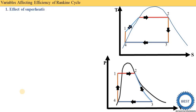First, we understand the effect of superheating of steam. This is the ideal Rankine cycle — points one, two, three, four represent the simple Rankine cycle. At point two, the steam is dry and saturated. What we need to do is superheat the steam: dry and saturated steam is further heated to increase its temperature. The cycle one, two, three, four represents using dry and saturated steam, and one, two-dash, three-dash, four, one represents the superheated steam cycle.